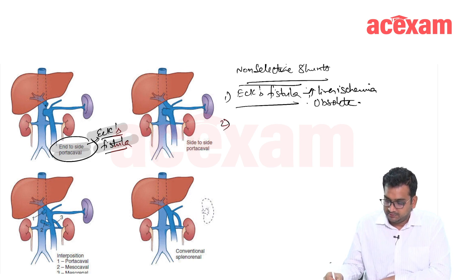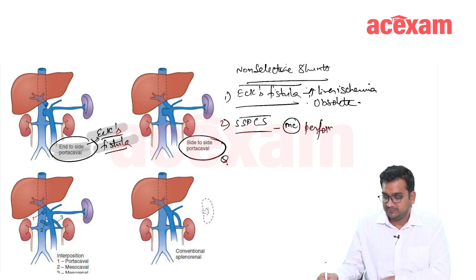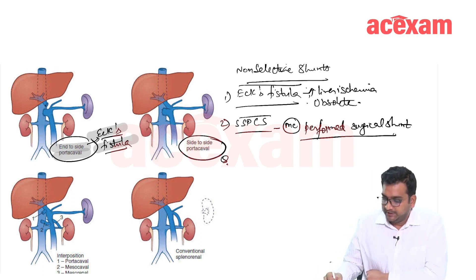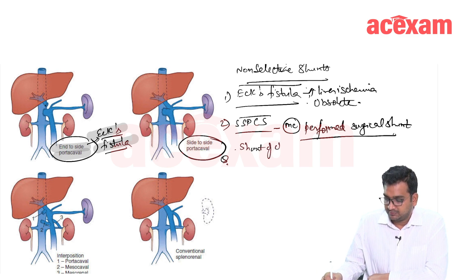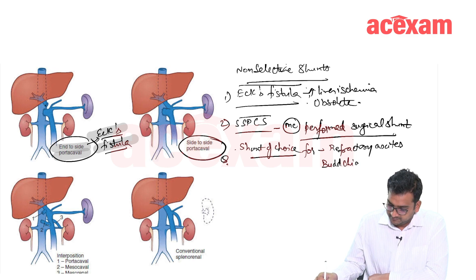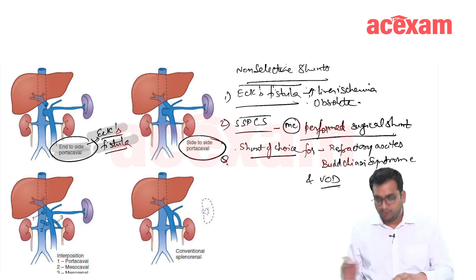The second is the side-to-side portocaval shunt (SSPCS). This is very important as it is the most commonly performed portocaval shunt and the most commonly performed surgical shunt. It is the surgical shunt of choice for refractory ascites, Budd-Chiari syndrome, and veno-occlusive disease.